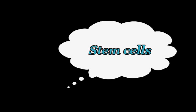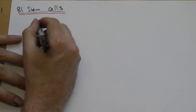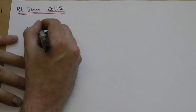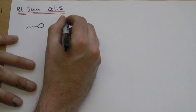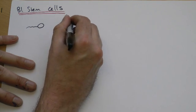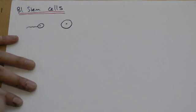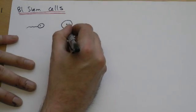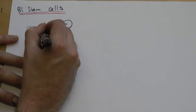This is B1 stem cells. If we wind it back for a second to the moment of conception, this isn't drawn to scale. The sperm are a lot smaller in reality. So here's our egg cell. Here's my rather enlarged sperm.